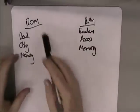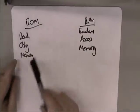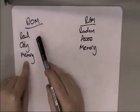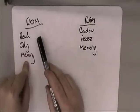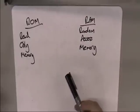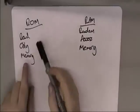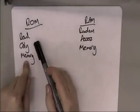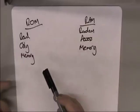Read Only Memory is really useful because it tells us something really important. ROM, Read Only Memory, is read-only — you can't write anything to it. As you're using your computer system, you can't change what's in the ROM because it's read-only, and that's really, really important.